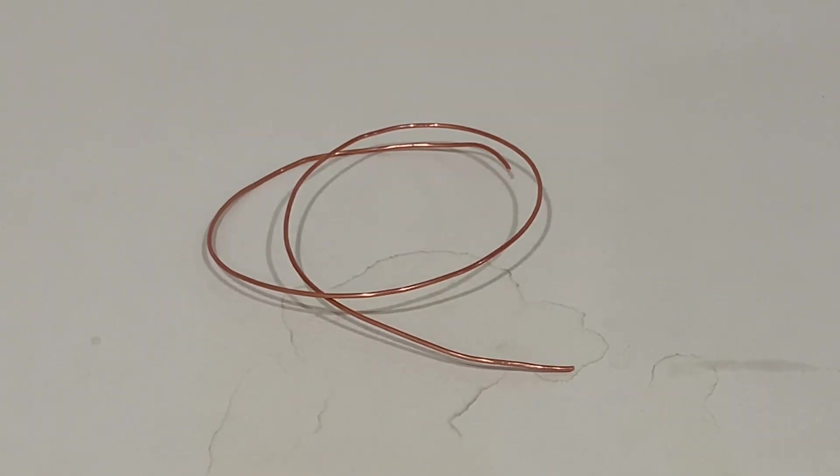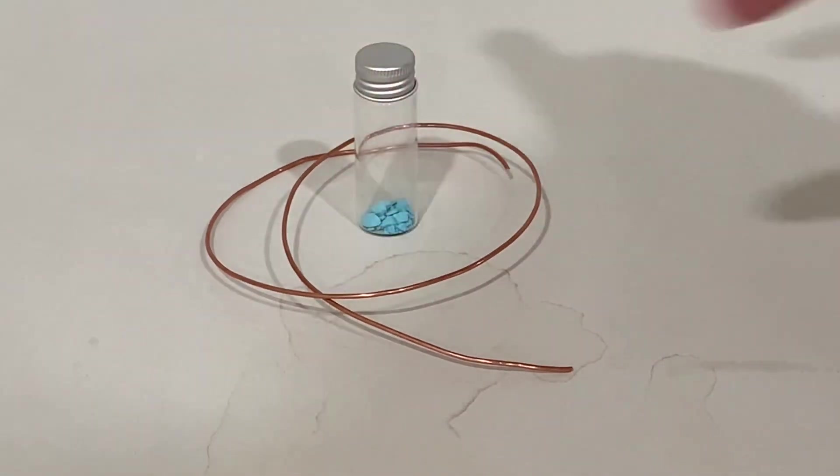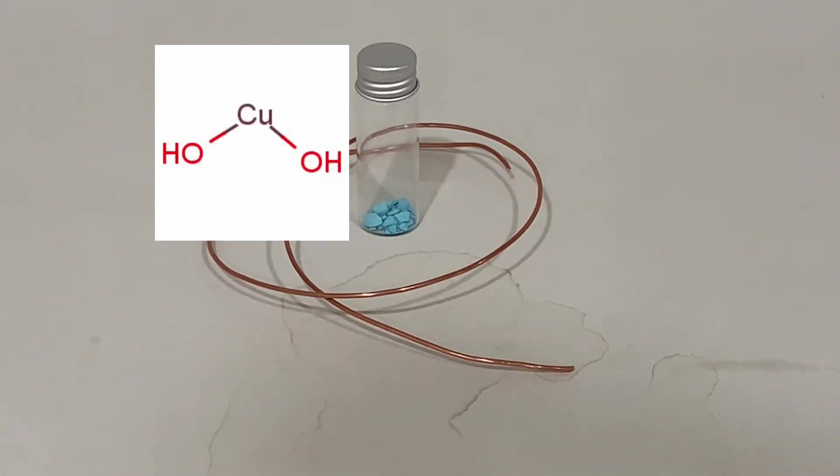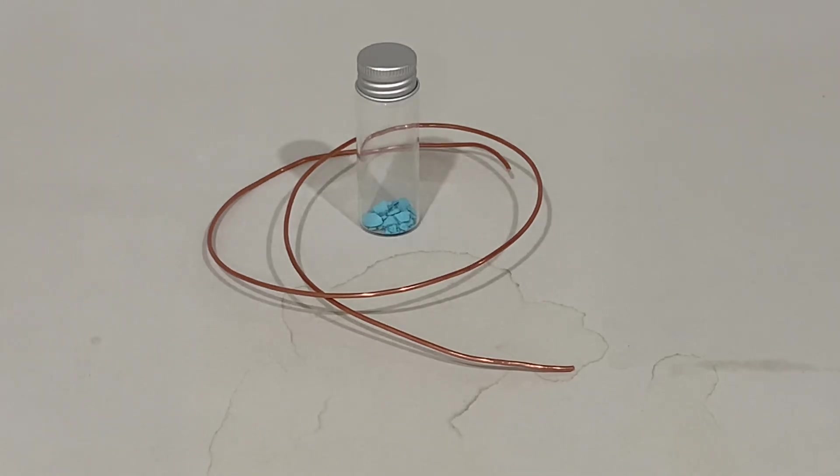So in today's newest episode of making chemicals you shouldn't have out of household materials you do, we will be making copper carbonate. Copper carbonate, which we will be making today, is the after version of copper hydroxide, which this reaction is supposed to yield.